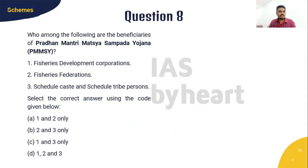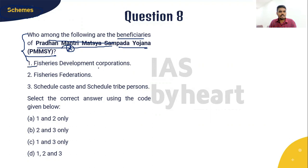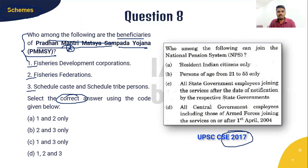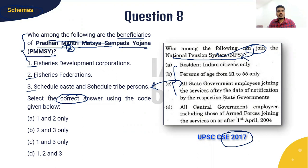Question 8 is from schemes and welfare measures: Who among the following are the beneficiaries of Pradhan Mantri Matsya Sampada Yojana? The options include: 1) Fisheries Development Corporation, 2) Fisheries Federation, 3) Scheduled Caste and Scheduled Tribe persons. We should find the correct answer. This question was inspired from a 2017 question paper about who can join the National Pension System. I will give you 10 seconds for the answer, then we will look at the explanation.